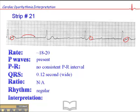The heart rate is consistent with AV dissociation, and the wide QRS is consistent with AV dissociation. When you have AV dissociation and a slow rhythm like this, we have a third-degree AV block with a heart rate of between 18 and 25 — in the low 20s in any case. So the interpretation is third-degree AV block with a heart rate of approximately 20.